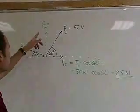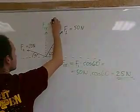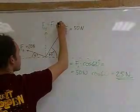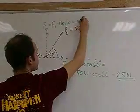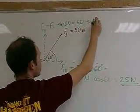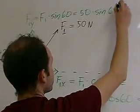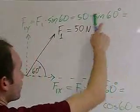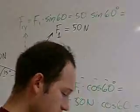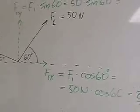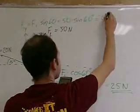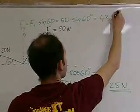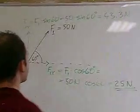The Y component is F1 times the sine of 60 degrees. So this would be 50 times sine of 60 degrees. And I believe that's square root of 3 over 2. I'm just going to do it here with a calculator, 50 times sine of 60. So that's about 43.3 newtons acting up.